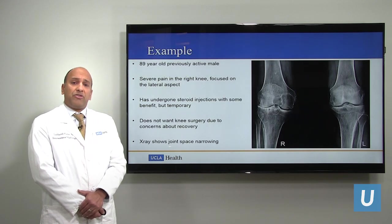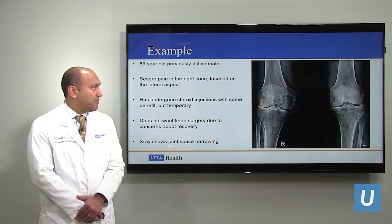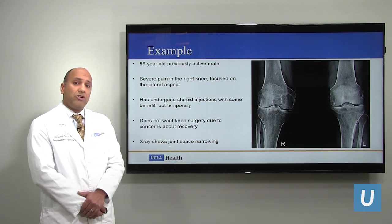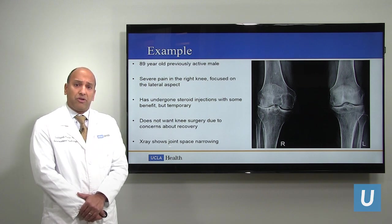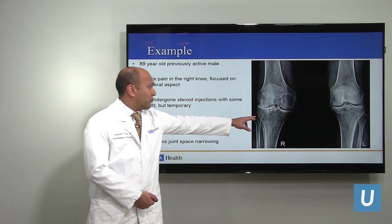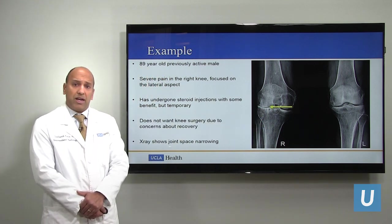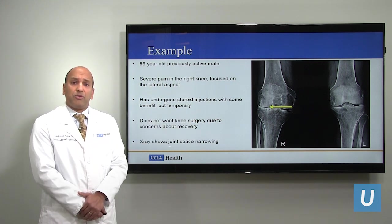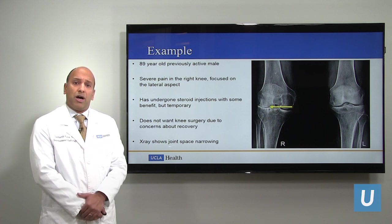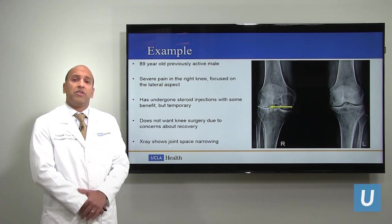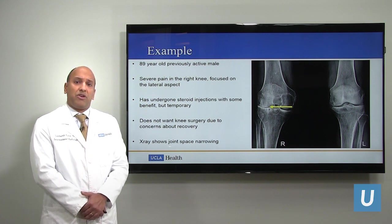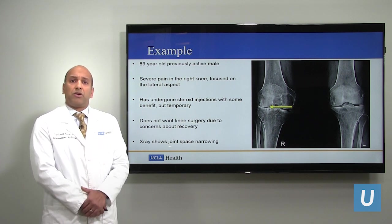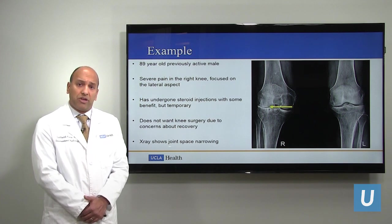Let's look at one example. This is an 89-year-old who was previously healthy and active. You can see his x-ray here — his right knee and his left knee. He has significant pain in his right knee due to arthritis, and you can see the joint space on his right knee is markedly narrowed on the outside aspect compared to his left knee where the joint spaces are quite normal. He underwent multiple joint injections which worked well initially, but after a while they stopped working. At 89 years old, he was told he should have a total knee replacement, but he was concerned about the surgical recovery time and had comorbid medical conditions that made him higher risk for anesthesia.